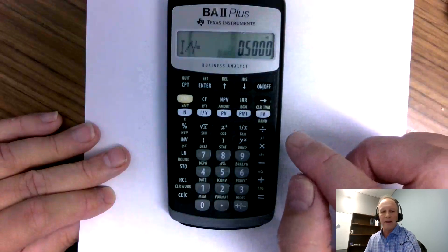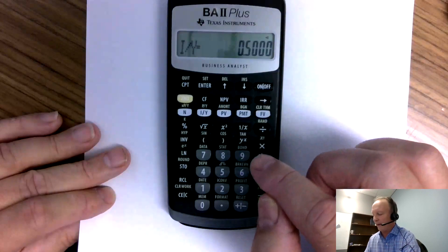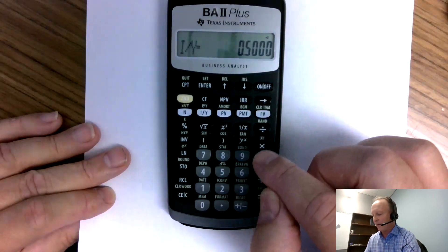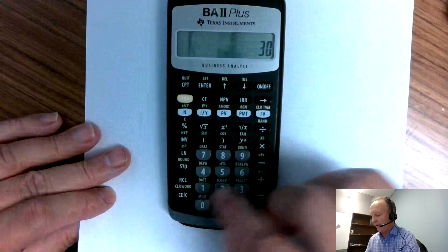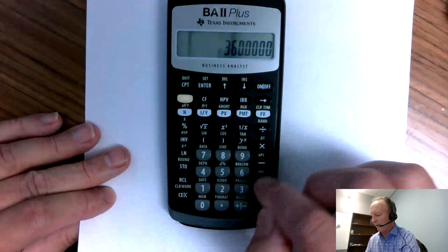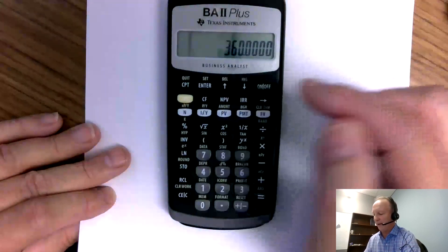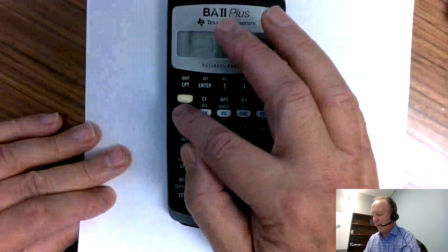Same thing with the time period. There's 30 years, but there's 12 months in a year. So it's 30 times 12 equals 360. Of course, I could have done that in my head, but that's going to be the N.